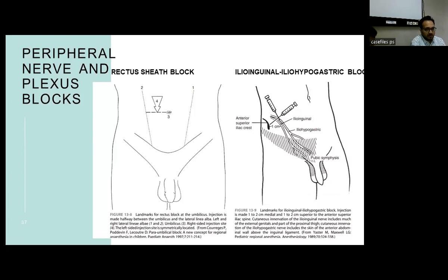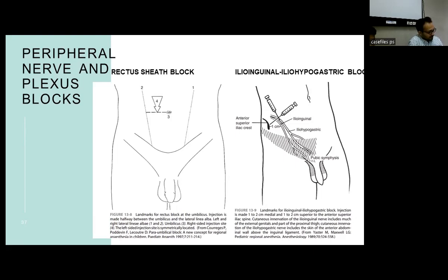The rectus sheath block is given for procedures involving IV or regional agents, particularly as we progress toward minimally invasive surgery, and can be used for umbilical or paraumbilical surgeries. The site of the block is midway between the umbilicus and the iliac crest on either side. The beveled needle is inserted until a pop or give is felt as the needle enters the anterior rectus sheath, then the drug is injected and the block is achieved on the ipsilateral side.